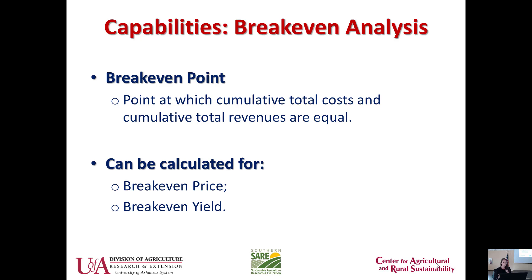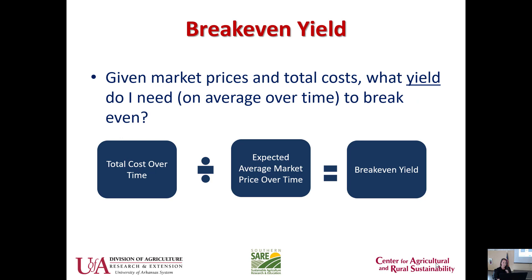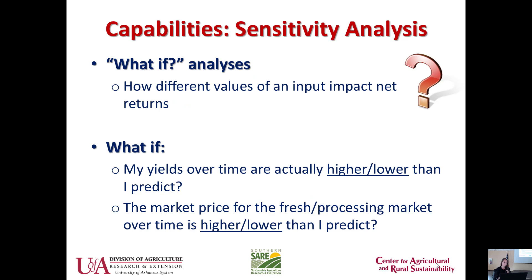Breakeven can be calculated for price — what price do your blackberries need to sell at to give you a breakeven point — or for yield — what yields do you need to obtain to break even in a certain amount of time? The calculation is straightforward: total cost divided by your expected average yield tells you the price you'd need on average. A similar calculation goes for yield: if you have certain market prices and know your costs, you can determine the average yield needed to break even.